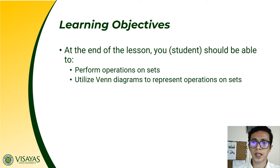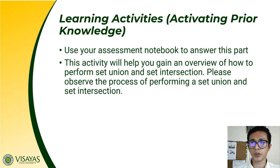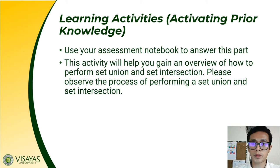You should be able to utilize the Venn diagrams to represent the four fundamental operations on sets. Before that, make sure you have with you these materials: your lecture notebook, assessment notebook, black ballpen, and intermediate paper. This activity will help you gain an overview of how to perform set union and set intersection.